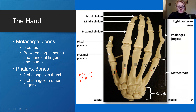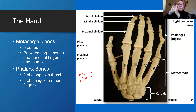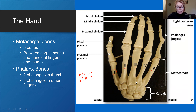Then we have phalanges. Each finger except the thumb has three phalanges: proximal, middle, and distal. The pollex — your thumb — has only two phalanges: proximal and distal. That's why you can bend your fingers at two joints, but the thumb only has one interphalangeal joint. So the hand has eight carpal bones, five metacarpal bones, and phalanges.